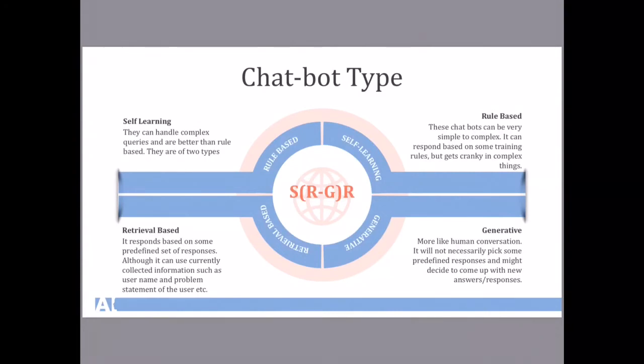One is the retrieval based and another is the generative based. Again retrieval based are more like it will give you some response based on some predefined set of response but then it will decide how to pull those information. Also it might include your currently available information from the conversation like your username or the problem that you are trying to solve.